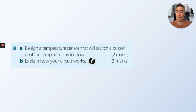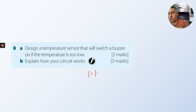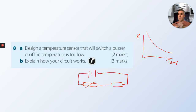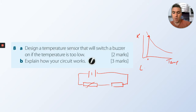The last question is an absolute beast: design a temperature sensor that will switch a buzzer on if the temperature is too low, and explain how the circuit works. Start by drawing a thermistor and a resistor in series. Looking at the thermistor graph — temperature on the x-axis, resistance on the y-axis: low temperature equals high resistance, high temperature equals low resistance.